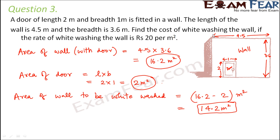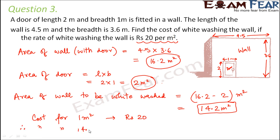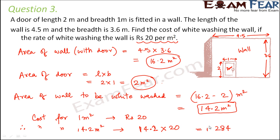The rate of whitewashing is rupees 20 per square meter, meaning 1 square meter costs rupees 20. Therefore, the cost for whitewashing 14.2 square meters = 14.2 × 20 = rupees 284. That is the cost of whitewashing this wall.